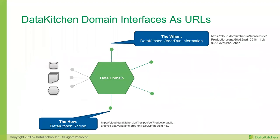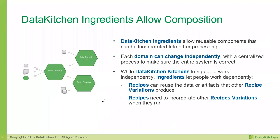One of our concerns is that with data mesh, some customers don't think intentionally enough about how to make it work. Think about these domain interfaces as URLs — the 'when' and 'how' our order-run information and recipe information provide. Between the features in our software — ingredients, kitchens, recipes — they are components for building a composable DataOps domain-driven and functional system. The combination of these three things is a very powerful way for your teams to achieve agility.